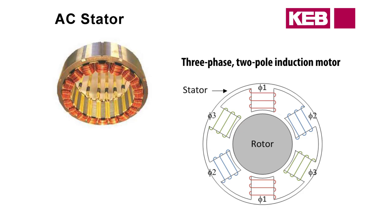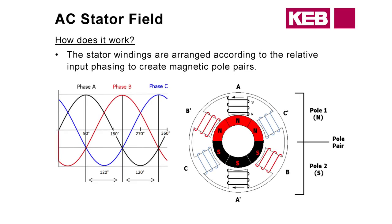The AC stator — the stator is going to be the stationary part of the motor; it's not going to move. That's where your coil windings are going to be. Here's a picture of what that looks like if you were to take everything apart. The rotor would obviously be the middle portion here — this is going to be your motor shaft, the rotating part of the motor. The AC stator field — that magnetic field — how does that work?